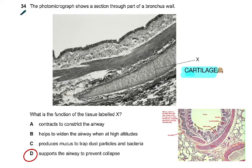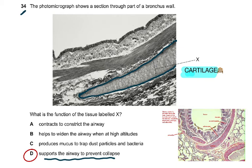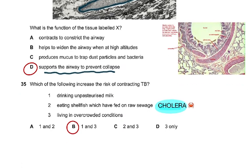Question 34: The photomicrograph shows a section through part of a bronchus wall. What is the function of the tissue labelled X? Looking at the micrograph and comparing with other micrographs of bronchus walls, the tissue labelled X is cartilage. The options include: contracts to constrict the airways; helps to widen the airways at high altitudes; produces mucus; supports the airway to prevent collapse. Please search for micrographs of bronchus walls online to familiarise yourself with these structures.